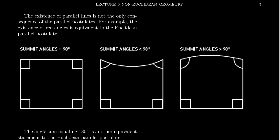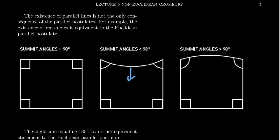When you try to construct things similar to rectangles — the idea of a Saccheri quadrilateral, which are quadrilaterals that have two right angles on the base — you get things that look like the following in hyperbolic geometry: the curvature goes inward. In elliptic geometry, you see the curvature going outward. The direction is different. These angles at the top are called the summit angles. In Euclidean geometry, the summit angles are 90 degrees. In hyperbolic geometry, the summit angles are actually acute — less than 90 degrees. In elliptic geometry, the summit angles are obtuse — greater than 90 degrees.